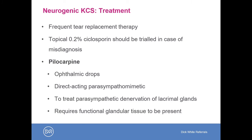For non-responders where the diagnosis of neurogenic dry eye is as certain as it can be, pilocarpine can be considered. Pilocarpine is a direct-acting parasympathomimetic used to treat parasympathetic denervation of the lacrimal glands. For it to work, there has to be some functional glandular tissue still present — so if the dry eye has been going on for many months that may not be the case, and patients may not respond.